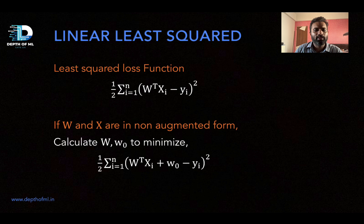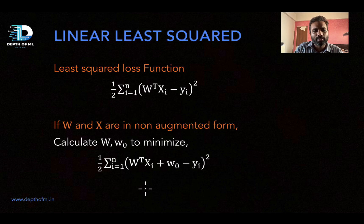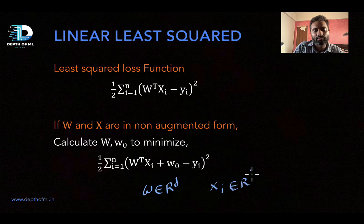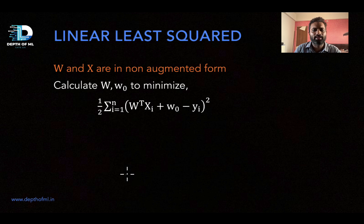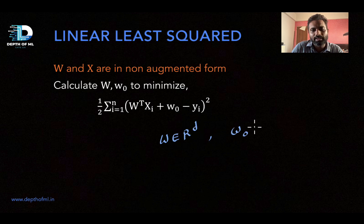If we consider the non-augmented form, the loss function will come out to be something like this — the same loss function written in non-augmented form. Here, capital W is of dimension R^d and capital X_i is also of dimension R^d. The task of linear regression is to obtain capital W and constant term w_0 such that the least square loss function is minimized.